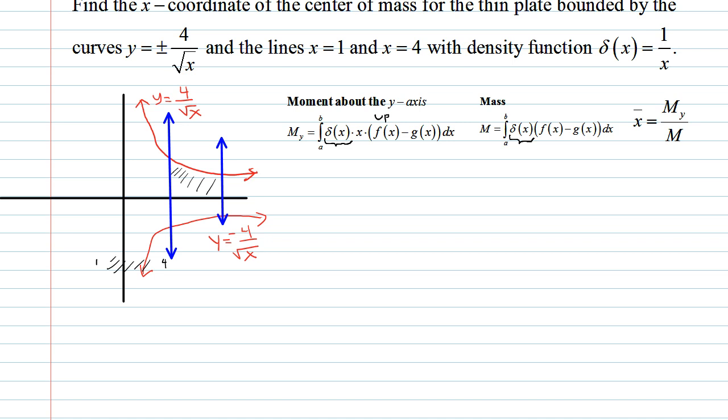f is your upper function, g is your lower function. And so there's also this factor of x that's in the moment about the y-axis. And so we just have to calculate these two integrals and divide the one by the other. The values of a and b are 1 and 4.